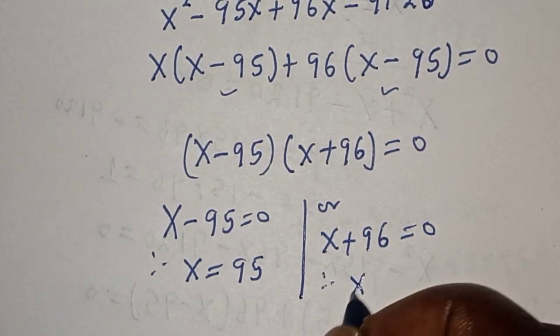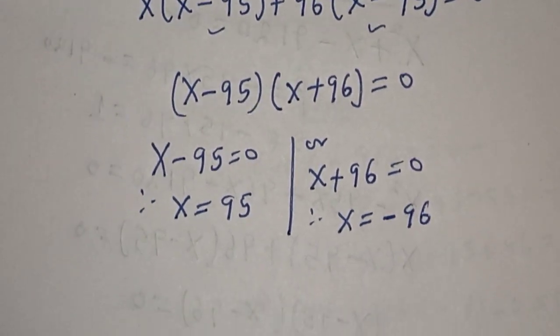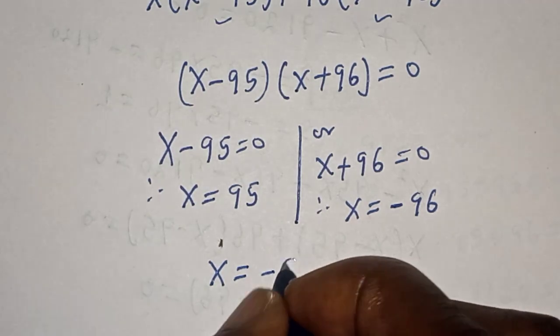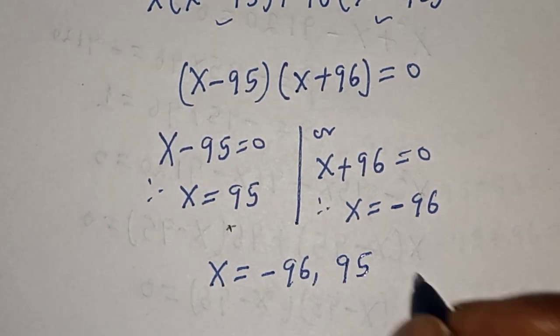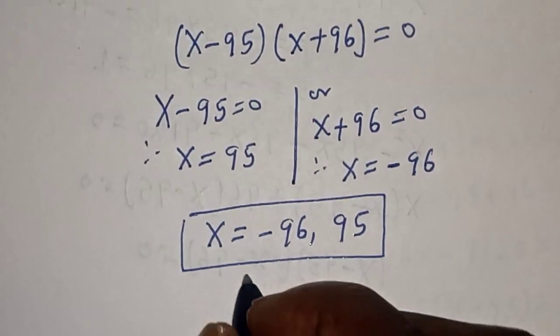Therefore x is equal to minus 96 and 95. Our final answer is x equals minus 96 and 95. We can check to confirm if our answer is right or wrong.